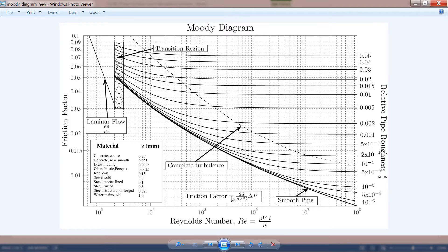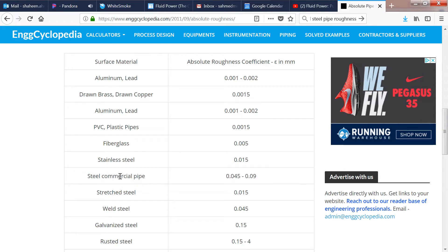To use this Moody diagram, we need the Reynolds number, which we have calculated before, and the relative roughness of the material. The problem says it's a commercial steel pipe. For commercial steel pipes, relative roughness varies between 0.045 to 0.09 millimeters. Let's assume 0.05 for the sake of this calculation.